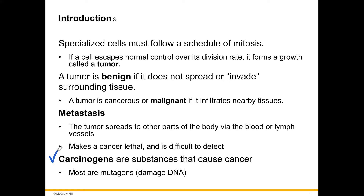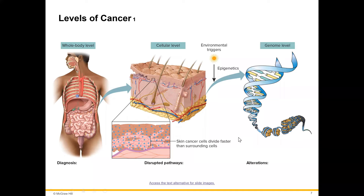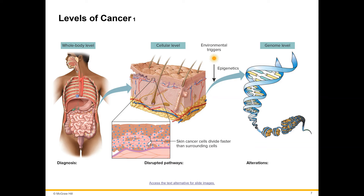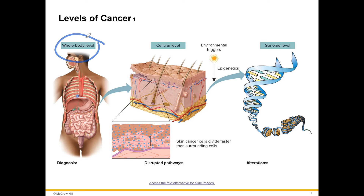Carcinogens are substances that cause cancer. Most are mutagens, meaning they damage DNA and cause mutations. Cancer can be diagnosed at the whole-body level, and we see disrupted pathways at the cellular level — for example, skin cancer cells dividing faster than surrounding cells — and alterations at the genome level. Mutations in DNA cause pathway disruption, cells divide out of control, form a tumor, and that tumor is diagnosed at the whole-body level.